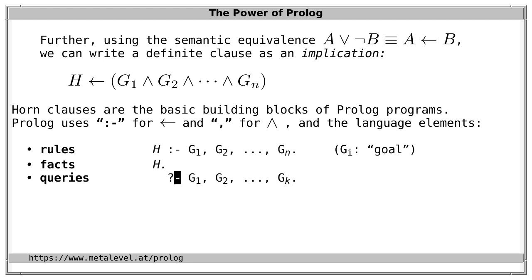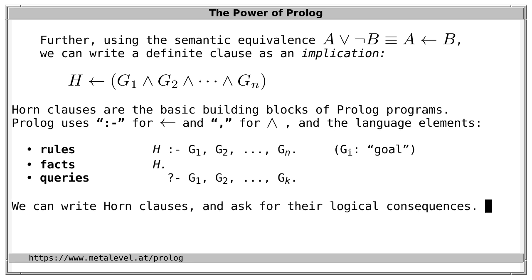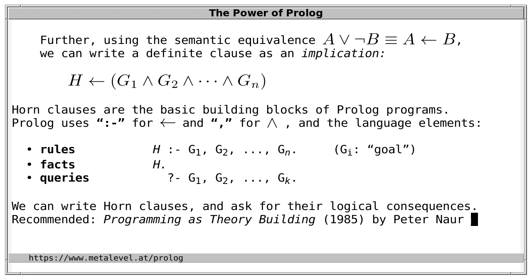A query is often written with a question mark instead of a colon. We can use Horn clauses for programming because we can write Horn clauses that express what holds and what follows from what, and we can ask for logical consequences of these clauses. All programming is of this kind — as programmers we build a theory of our domain of interest. One paper highly recommended on this topic is 'Programming as Theory Building' by Peter Naur, which argues this point very well.